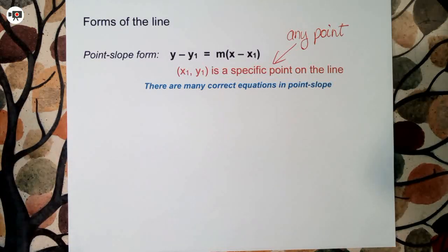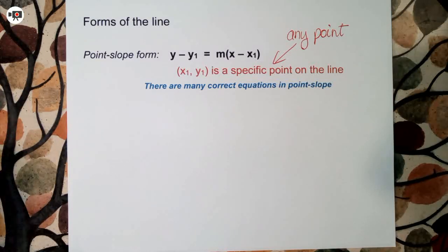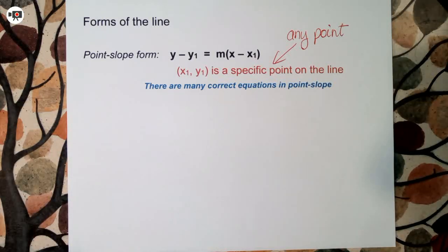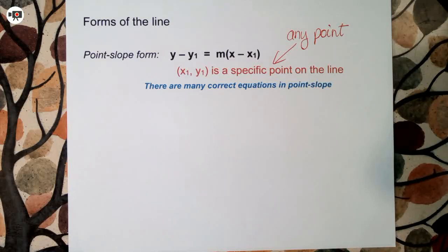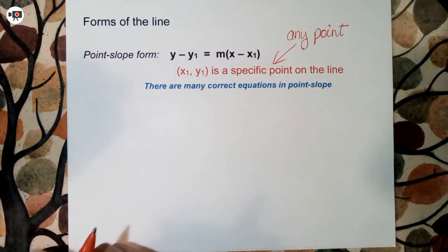You'll recall that slope-intercept has only one correct form — it's when y is isolated and everything is simplified. However, in point-slope form, any point on the line you can stick in here and it'll make a valid equation. They'll all simplify to the same equation; it's just using a different point. So it's useful when you have a point. Now if the point you have happens to be the y-intercept, you'll probably use y equals mx plus b, the slope-intercept form. But lots of times you don't have that.